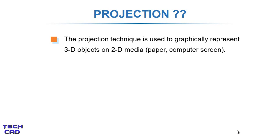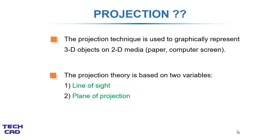Projection technique is used to graphically represent 3D objects on 2D media. 2D media can be any surface — it can be paper, it can be a computer screen. To make a projection of any object we need two variables: first is line of sight, and another is plane of projection. Plane of projection means where you have to project your line of sight. With the help of examples we will understand these two things.